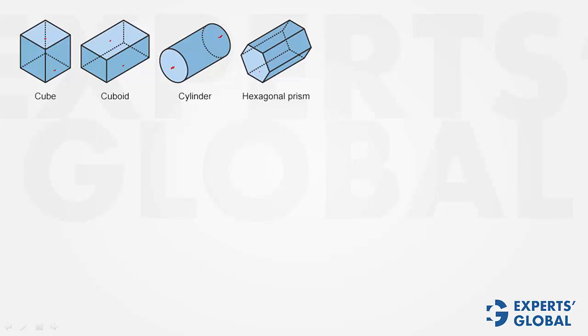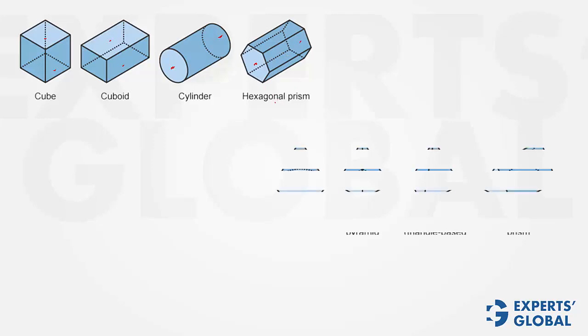Make this solid stand. This side will become the base, the other side will become the top. The base and the top are congruent, and this is a prism with a hexagonal base, and that is why it is referred to as a hexagonal prism.